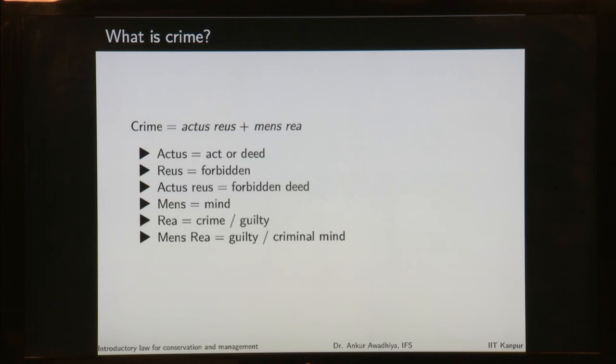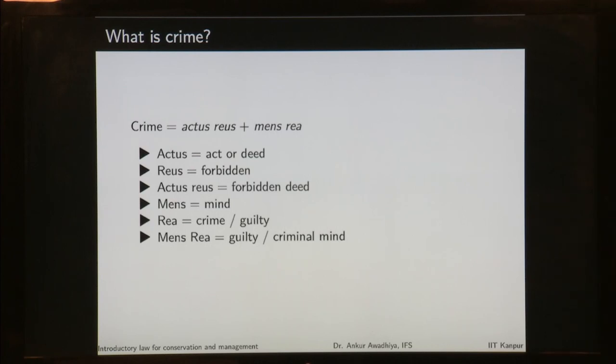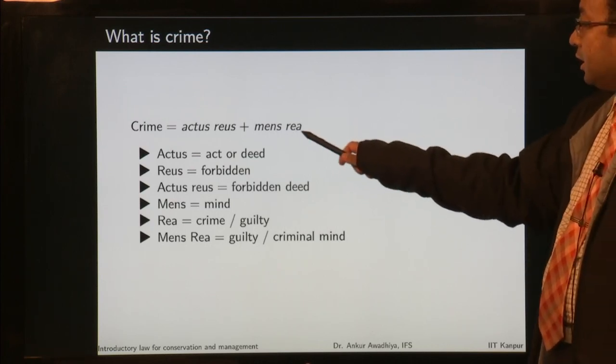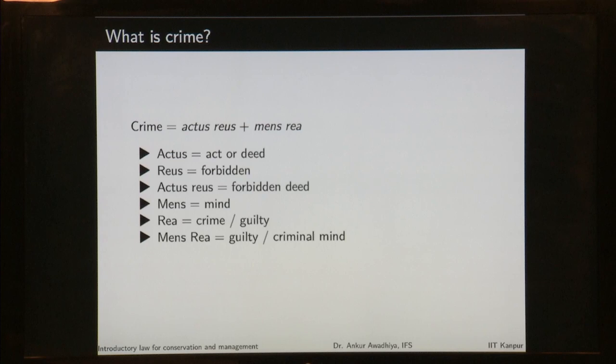Crime consists of two things: actus reus and mens rea. Actus reus means a forbidden deed — you did something that is forbidden. But just doing the forbidden thing will not make it a crime; it must also have mens rea. Mens rea means a guilty mind or criminal mind. Just having a criminal mind will not make it a crime; you must have a guilty mentality and then, with that mentality, do the forbidden act. Crime equals actus reus plus mens rea.